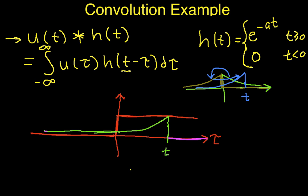And for values of tau less than zero, u of tau is zero. So we're going to have a value of zero for all values of tau less than zero.